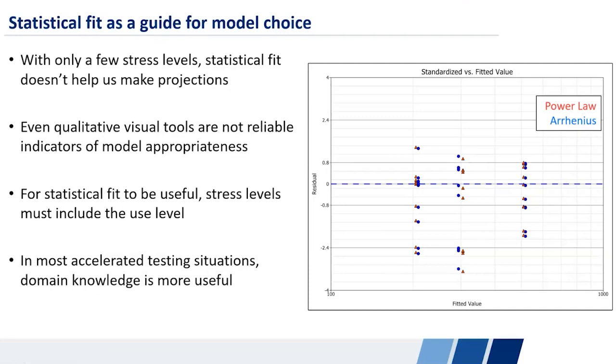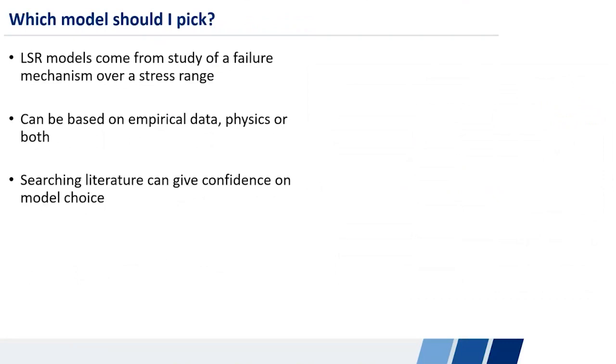So how do I do that? What does that actually look like? Where do these things come from? Where does the Arrhenius relationship, where does the power law relationship come from? Where do those other ones that we saw come from? Well, they come from someone really smart studying a particular failure mechanism over a range of stresses in a way that we can't in our accelerated test.